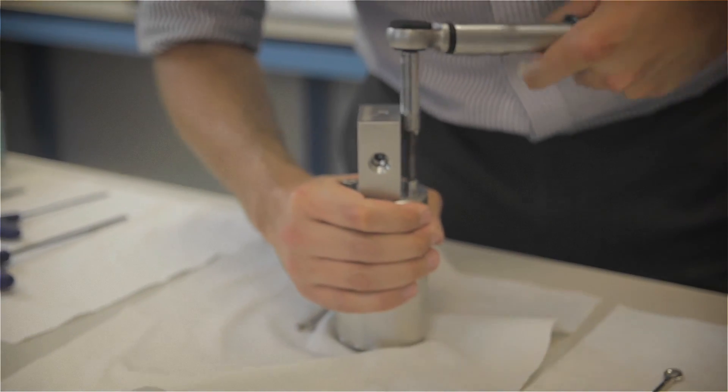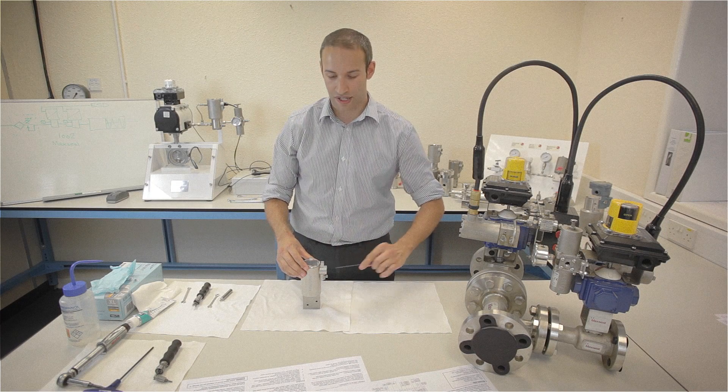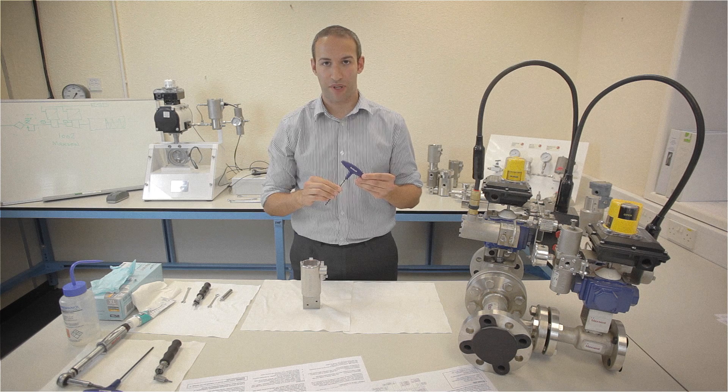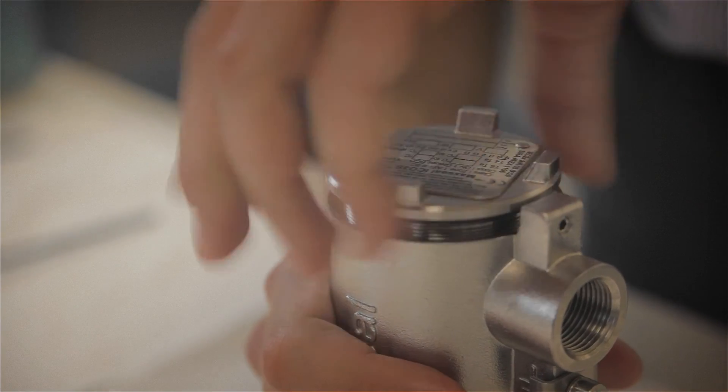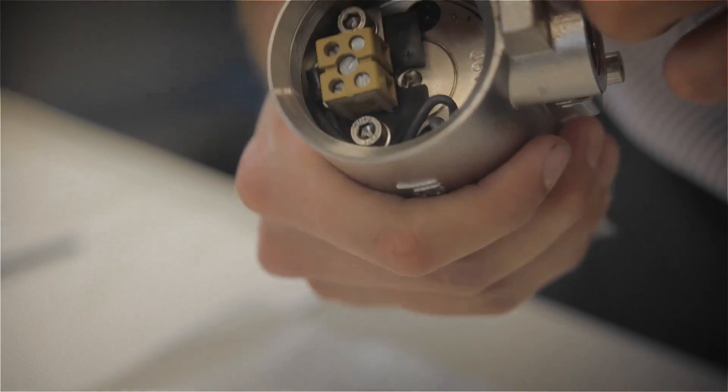Now the last stage is to remove the top cap and replace the sealing o-ring. We do this using a 2.5mm hex key. Using our hands, we're going to unscrew the lid. Check that the bore mating face on the solenoid pot is clean and free from any damage.